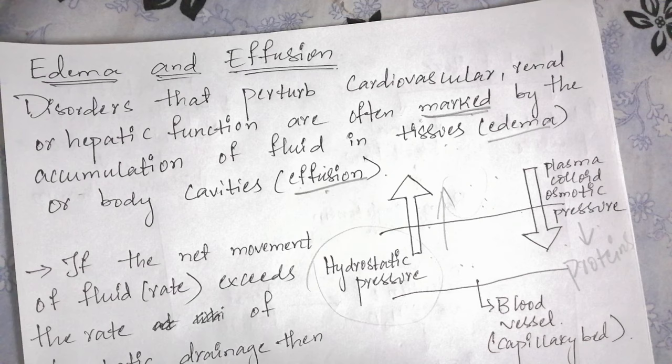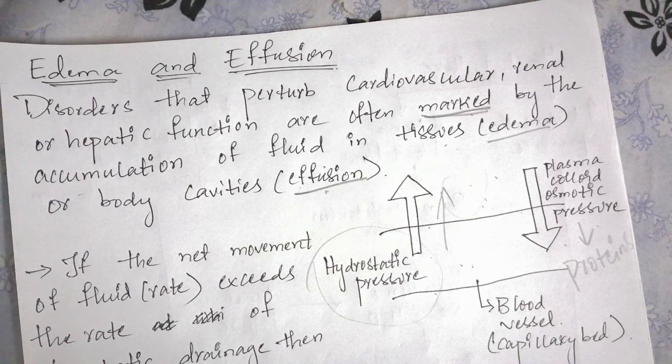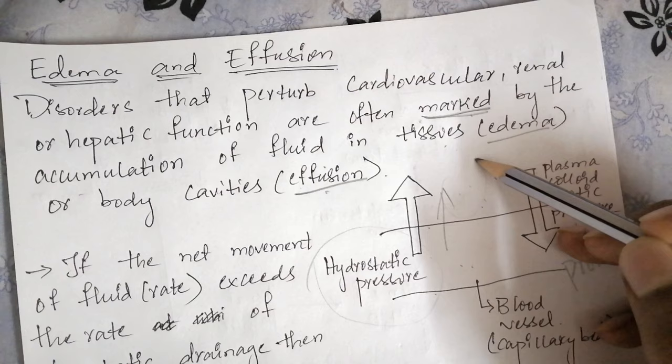More than half of the plasma protein content is albumin, so colloid osmotic pressure is mainly due to albumin. Hydrostatic pressure is mainly at the arterial end, which makes fluid get out easily, while plasma colloid osmotic pressure is at the venular end, which makes fluid come back into the blood vessel, basically keeping the tissue dry.